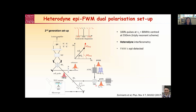We use epi-detection, detecting four-wave mixing in reflection, and then interfere the four-wave mixing with an external reference field that is not radio-frequency shifted. Through this interference, we obtain beat frequencies at appropriate radio frequencies, allowing us to distinguish the reflected probe from the amplitude-modulated sideband corresponding to the four-wave mixing. We can detect these with a lock-in amplifier and simultaneously measure both reflectometry and the four-wave mixing image from the sample.